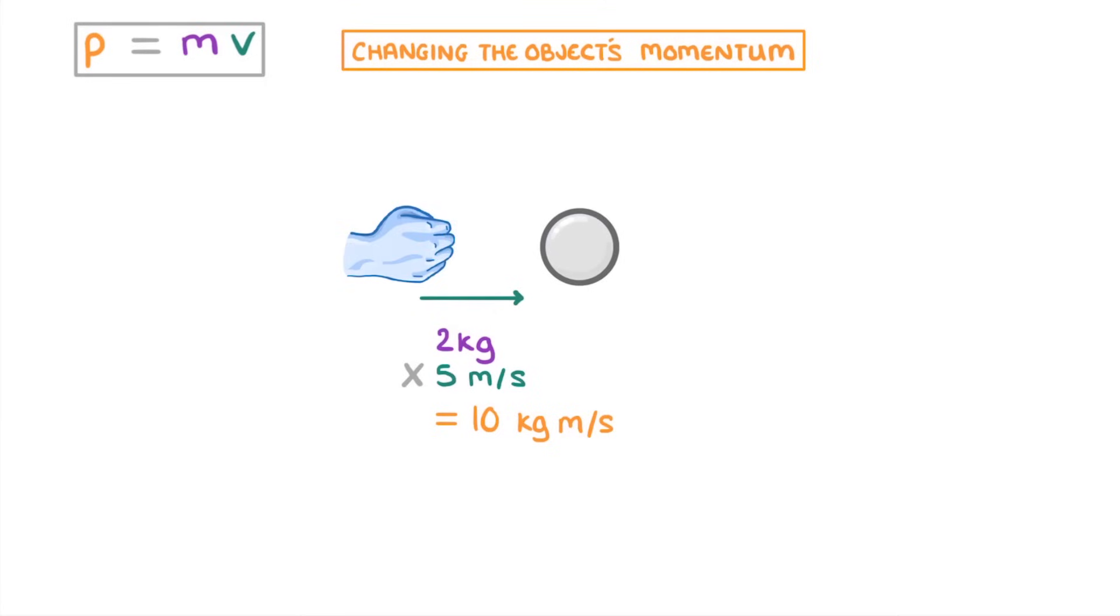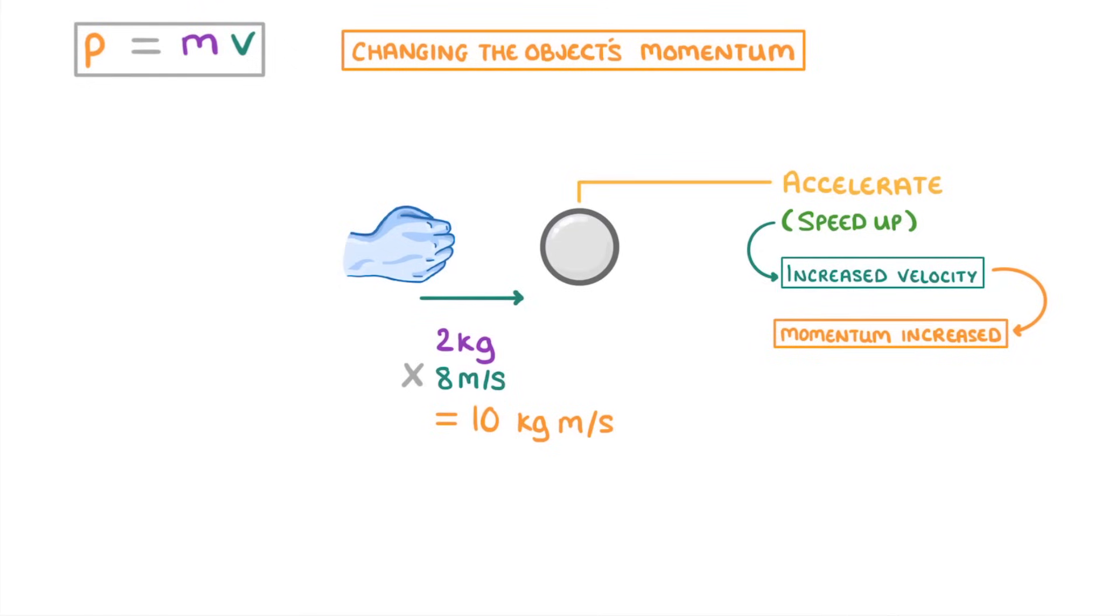If we then applied a force to it though, in the same direction as it was travelling, then that would cause it to accelerate and speed up. This increased velocity would mean that its momentum has also increased. For example, if it was now travelling at 8 metres per second, its new momentum would be 2 times 8, so 16 kilogram metres per second.